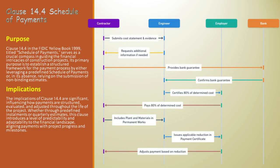The engineer assesses the actual progress and compares it to the progress estimated in the payment schedule — a key step in determining if the payment schedule remains relevant. If the actual progress is less than estimated, the financial manager may request the engineer to revise the installments, and the engineer determines revised installments based on actual progress. The engineer notifies the contractor of the revised installments, ensuring transparency. Finally, the contractor adjusts to the revised payment schedule, which is essential for maintaining contractual compliance and financial balance.